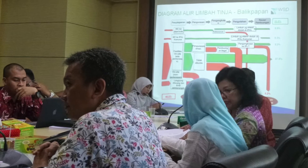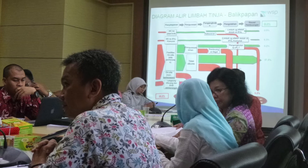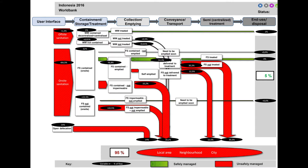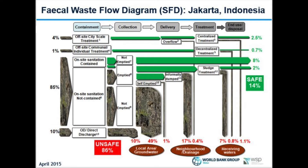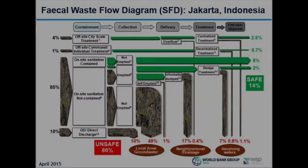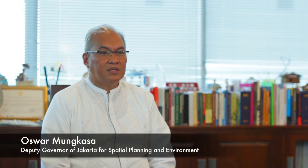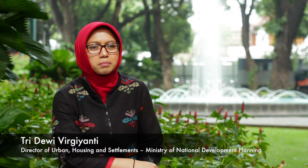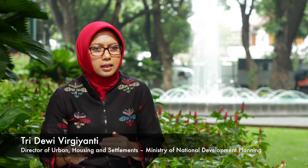The Fecal Waste Flow Diagram, or SFD, was first used in Balikpapan in 2014, and then later in the capital, Jakarta. The SFD is really helpful to show us where Jakarta has sanitation problems. I appreciate the SFD highly — it illustrates the problem of fecal waste management from the household to the final treatment and shows the executive what they need to know about safely managed sanitation.